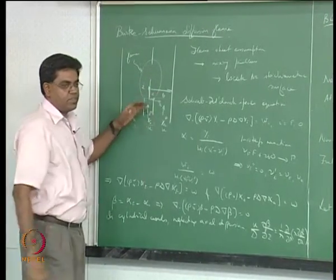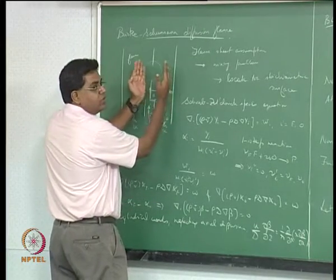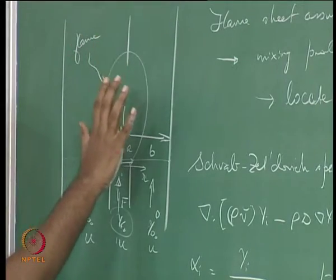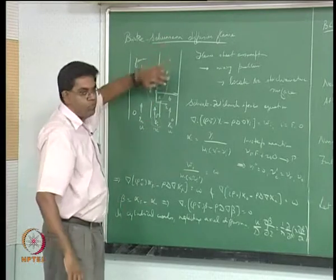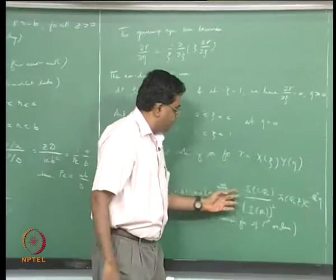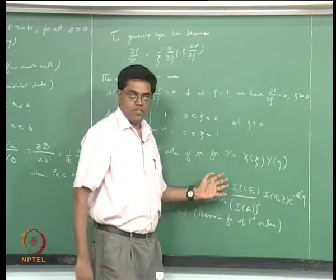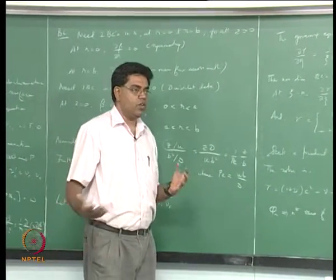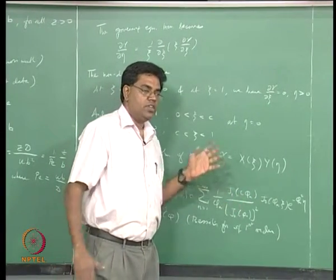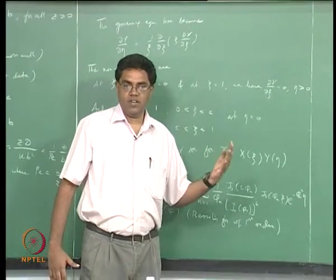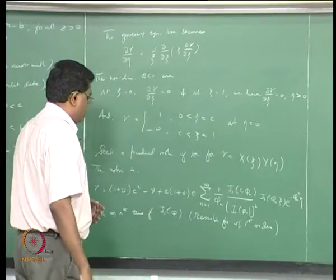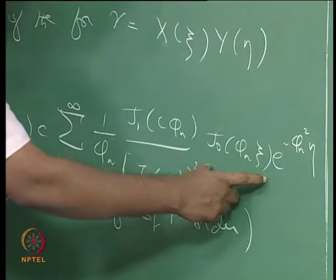The initial step discontinuity is represented as a series (Fourier-Bessel), then decays downstream as mixing homogenizes the profile. The exponential term e^(−φₙ²η) decays in η, so far from the burner lip the entire summation vanishes and γ approaches the constant term (1+ν)C² − ν, which depends only on ν and C.